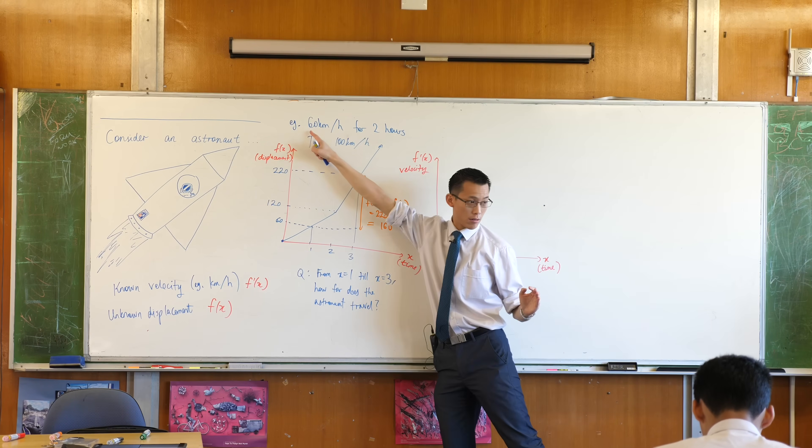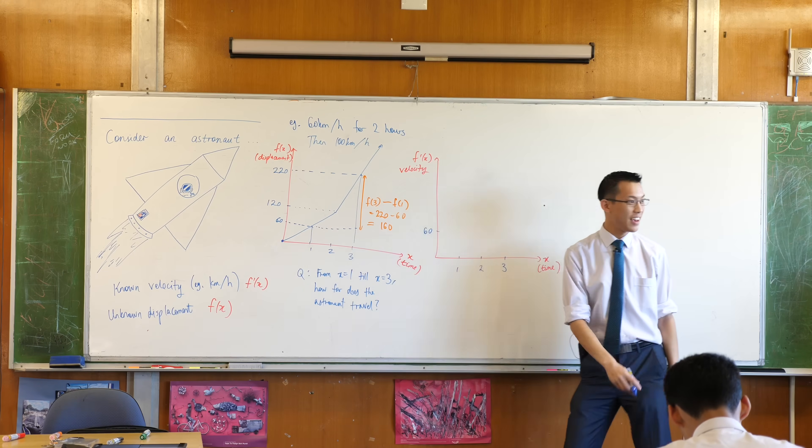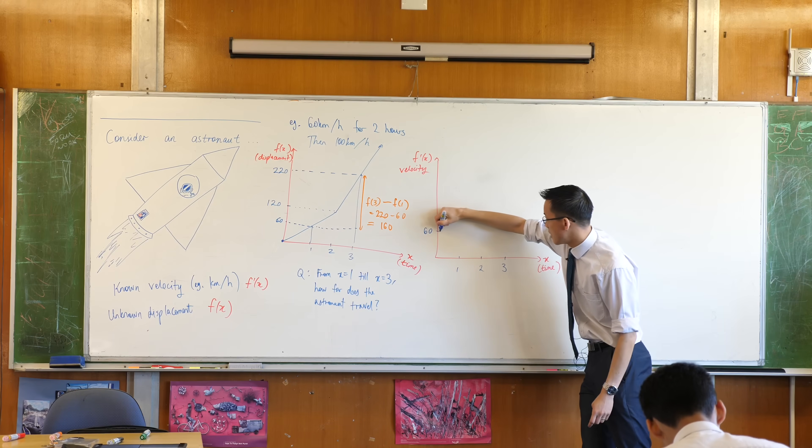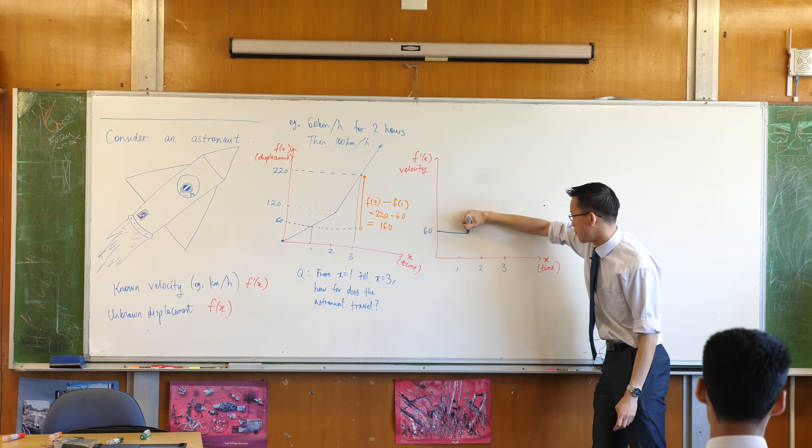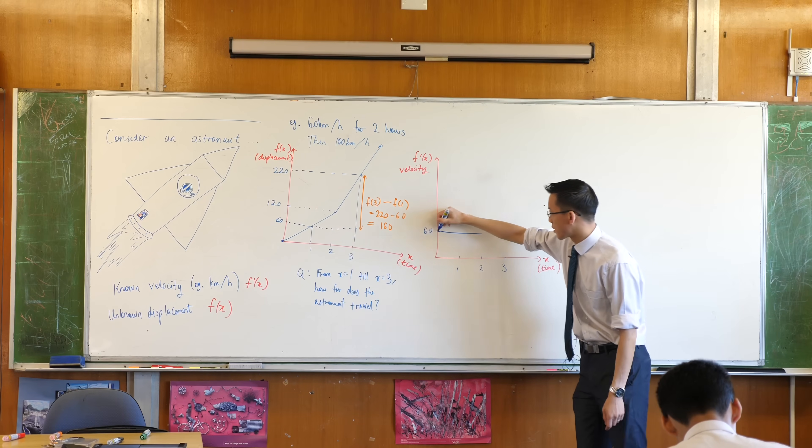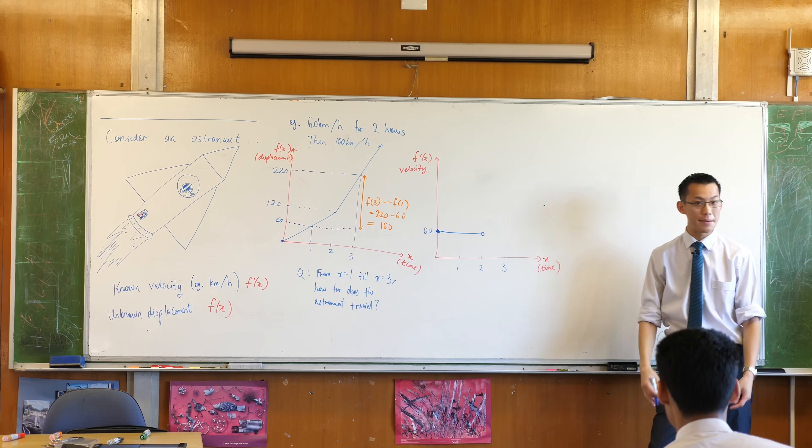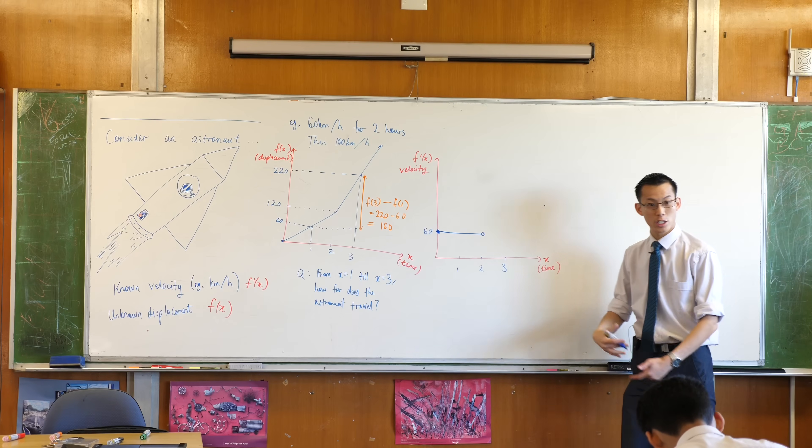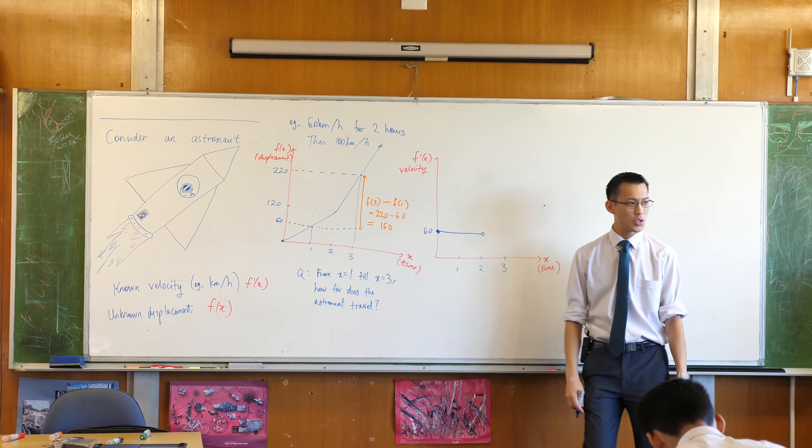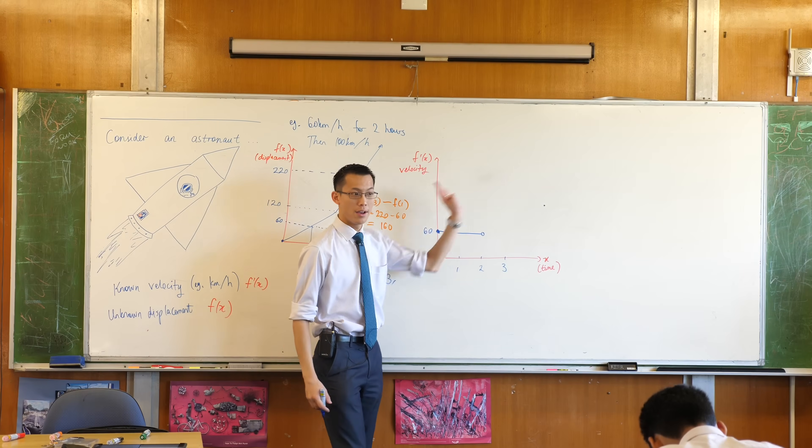It's 60. So I'll put 60 here. For the first two hours, that velocity is just 60. I'll put a marker in here - I'll make this a hollow circle because in a second it's about to change. They're going to speed up.